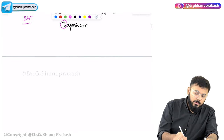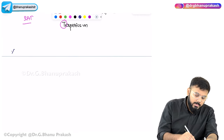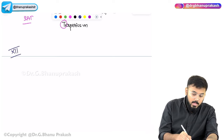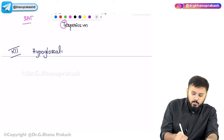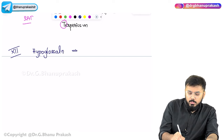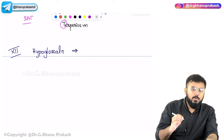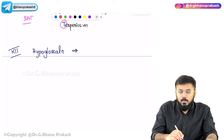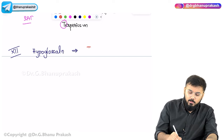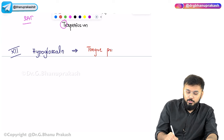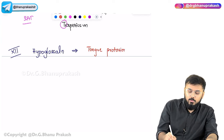The hypoglossal nerve (CN XII) is the twelfth cranial nerve with only one action: tongue protrusion.